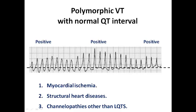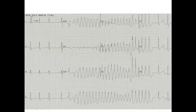The common causes for polymorphic VT with normal QT interval are myocardial ischemia — for example in acute myocardial infarction — structural heart disease, and channelopathies other than long QT syndrome. These can be the causes for this ECG presentation.